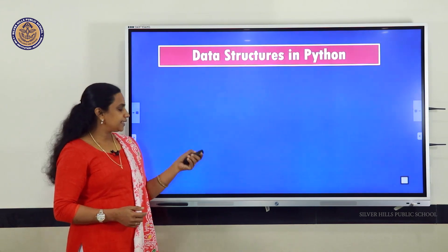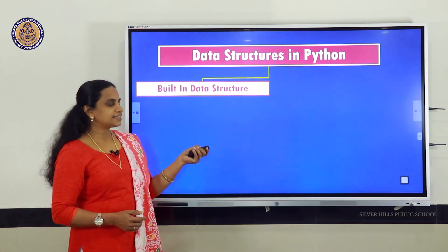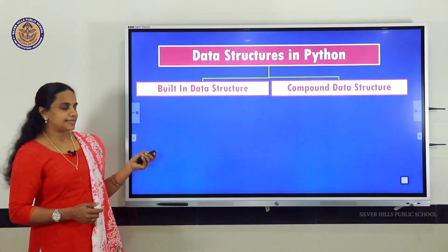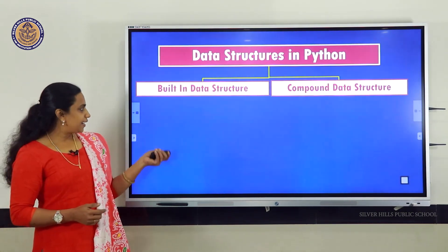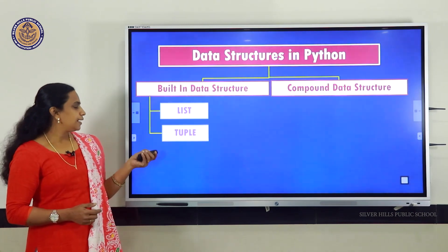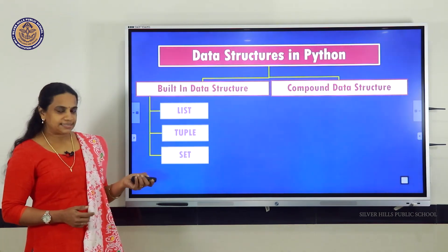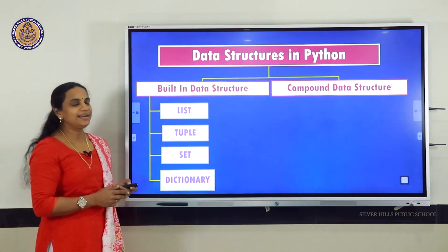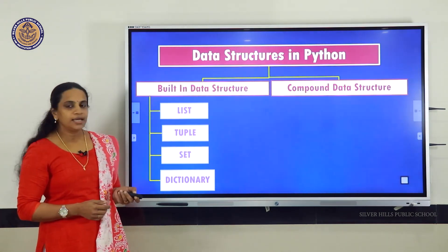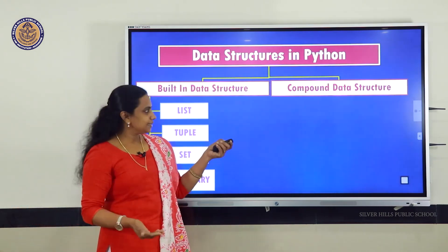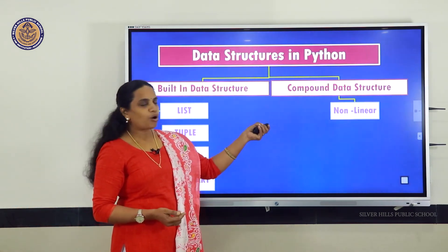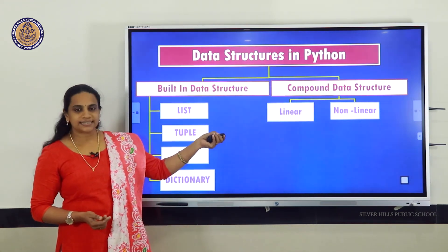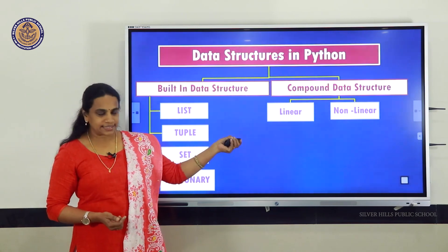Data structures in Python are mainly divided into built-in data structures and compound data structures. The built-in data structures are again divided into list, tuple, set, and dictionaries. This part we had covered last year. Therefore, we will move on to the next section — compound data structures — which are again divided into nonlinear and linear data structures.